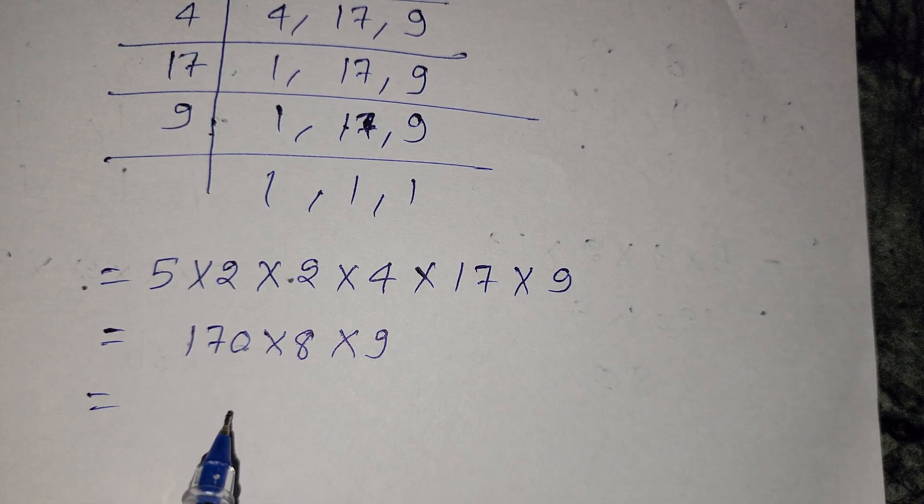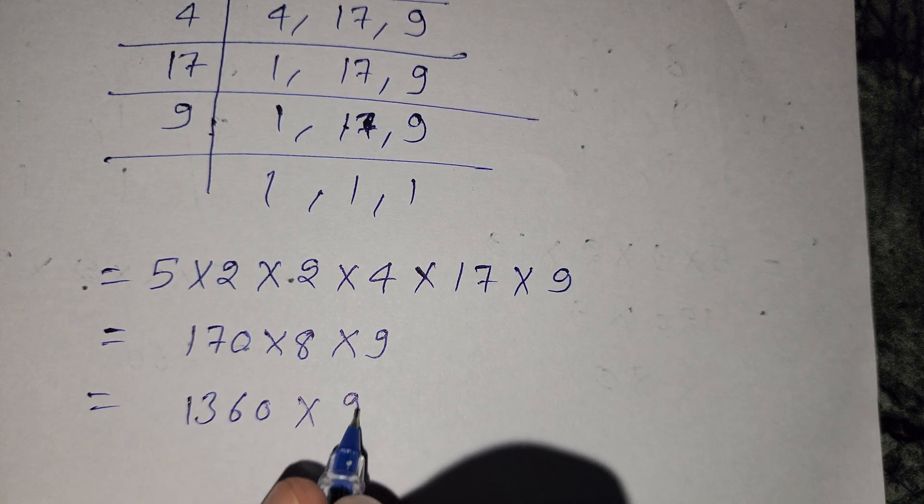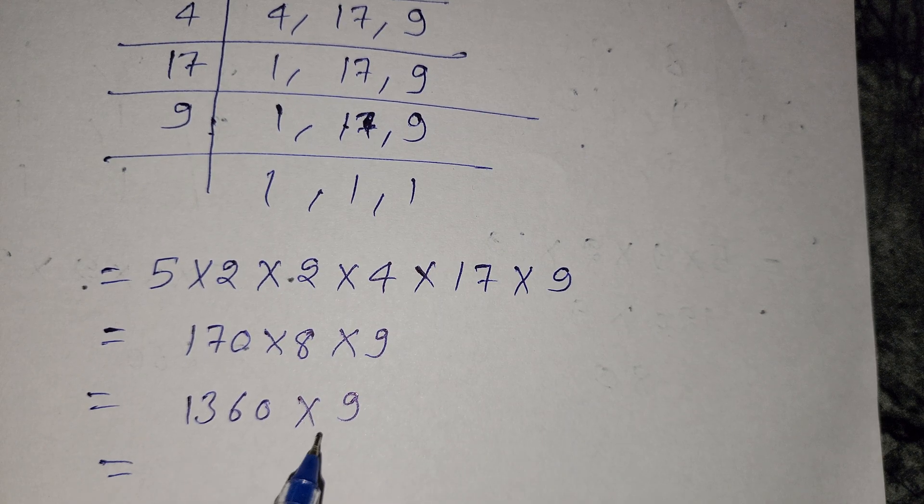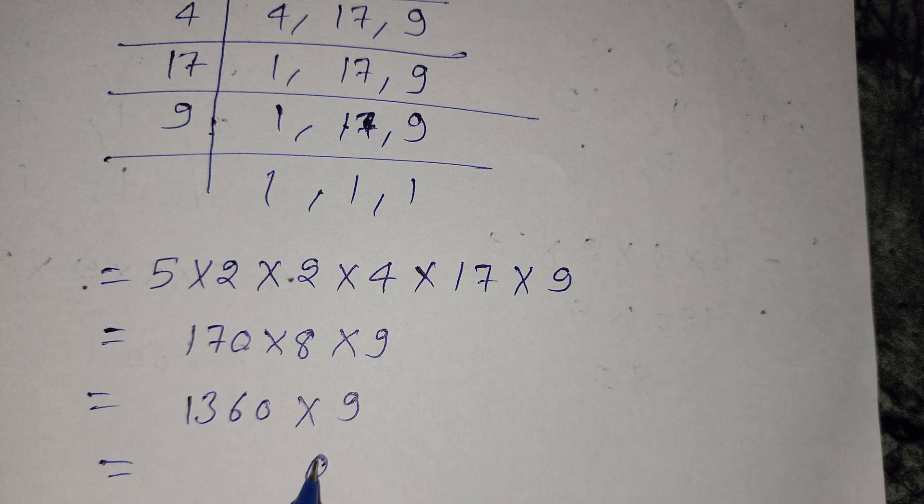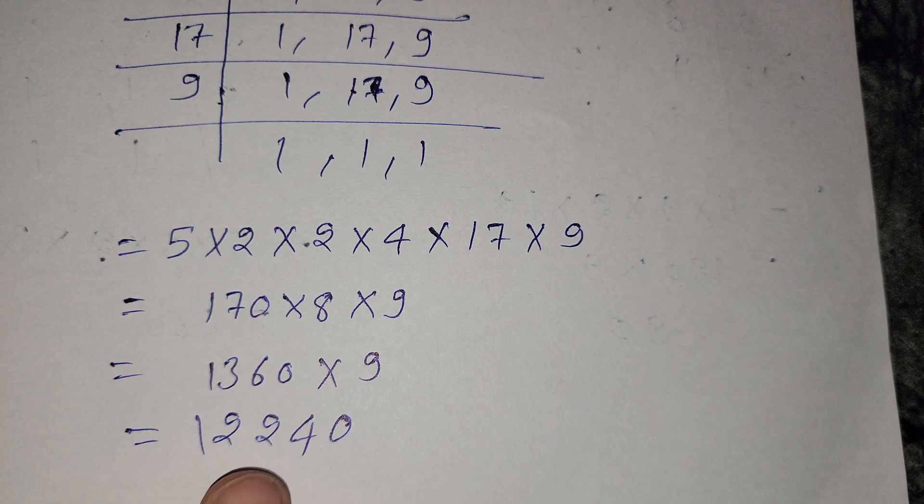So 8 times 7 is 56, then we get 36 times 9. Now we divide to get 0, 4, 2, 2, 1. So our final LCM is 12,240.